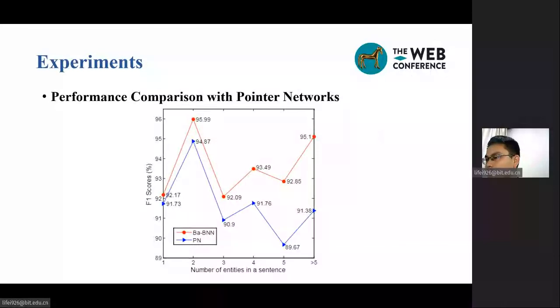As our Ba-BNN model is constructed on top of the pointer networks architectures, we compare the performance of our proposed model with pointer networks. We observe that the proposed Ba-BNN model consistently outperforms the pointer networks based model in each group. The difference gets bigger when the number of entities in a sentence becomes larger.